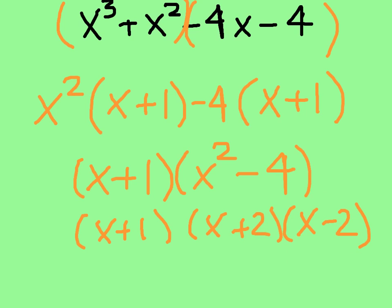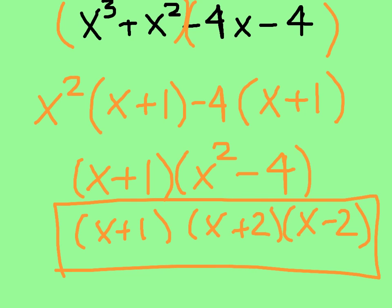This is factored completely. The last check I always want to do when I'm factoring is to see if I have any greatest common factors left inside my binomials — in which case I don't, so I know this is the final answer. The absolute last thing I can do is check my work by multiplying these binomials together, and if I get this original polynomial, then I know I did my work correctly.